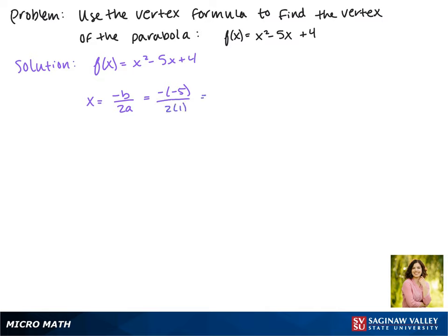The negative of -5 is positive 5, so our x value is 5/2. To find our y, we need to plug it back into our function, so we're going to plug in 5/2. Here we get (5/2)² - 5(5/2) + 4.